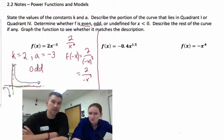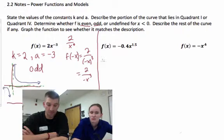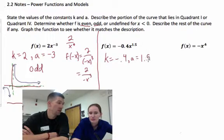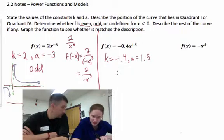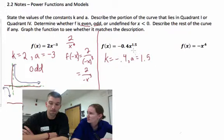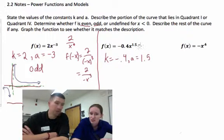Next up is negative 0.4x to the 1.5 power. So, let's just start off right off the bat. K is negative 0.4 and A is 1.5. Now, describe the portion of the curve that lies in quadrant 1 or quadrant 4. To the previous slide we go. K is negative, which means the graph lies in quadrant 4. And A is positive, which means that the graph passes through (0,0). Should we talk perhaps about what does 1.5 even mean as an exponent?